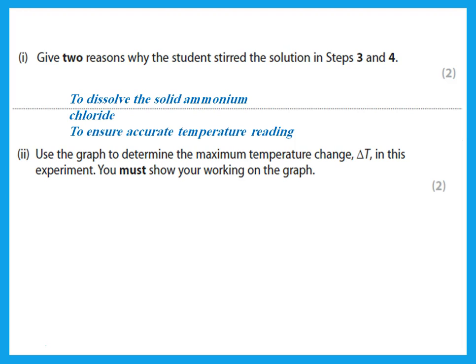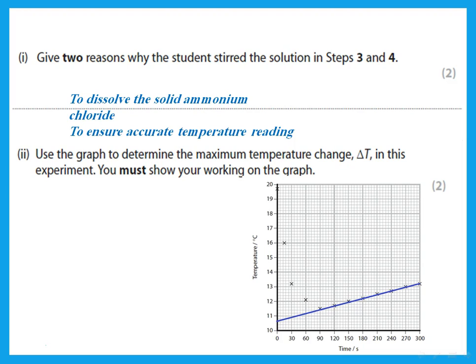Stirring dissolves the solid and distributes the heat evenly so that the temperature read is accurate. To determine the maximum temperature change from the graph, you need to extrapolate the line. The temperature started at about 19.7°C and when extrapolated it gives about 10.7°C, meaning you have a maximum temperature change of 9°C.